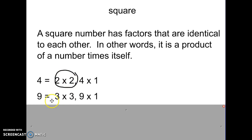9 would be another square number because 3 times 3 gives you 9. And so, because it has those factors that are identical numbers that gives you this number, this is a square number.